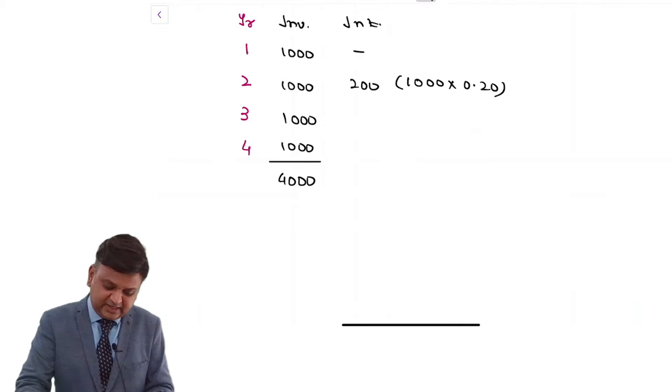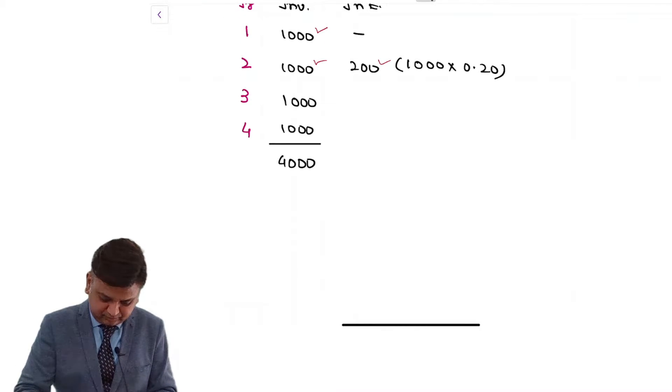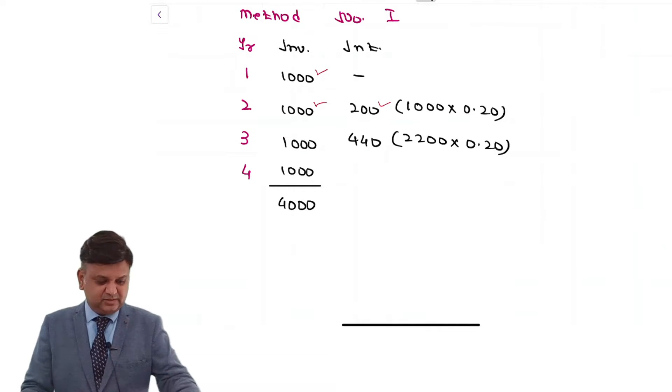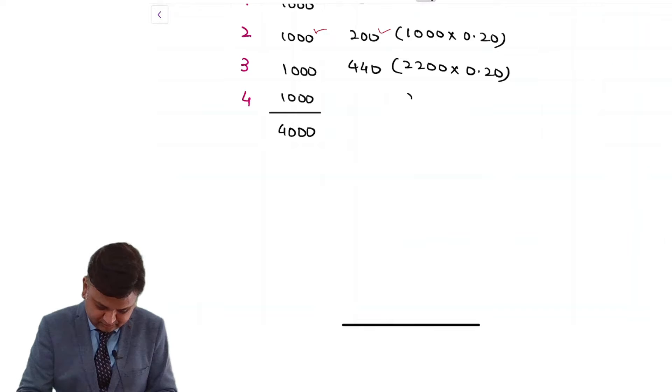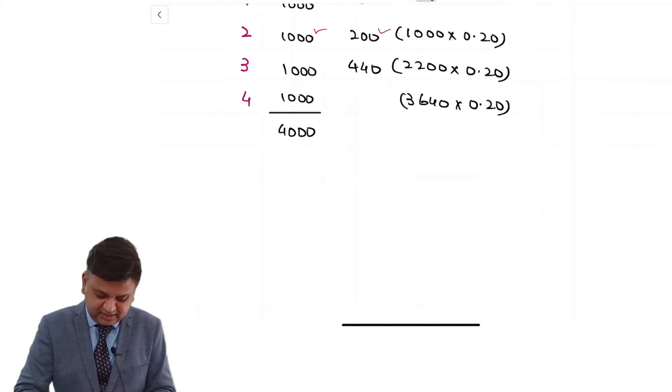Now in the 3rd year, you will get interest income on initial 1,000, additional 1,000 and on this 200. So it is 2,200 into 20 percentage. That comes to 440. Then it is 1,000 rupees for 3 times plus 200 plus 440. That is 3,640 into 20 percentage. That is 728.